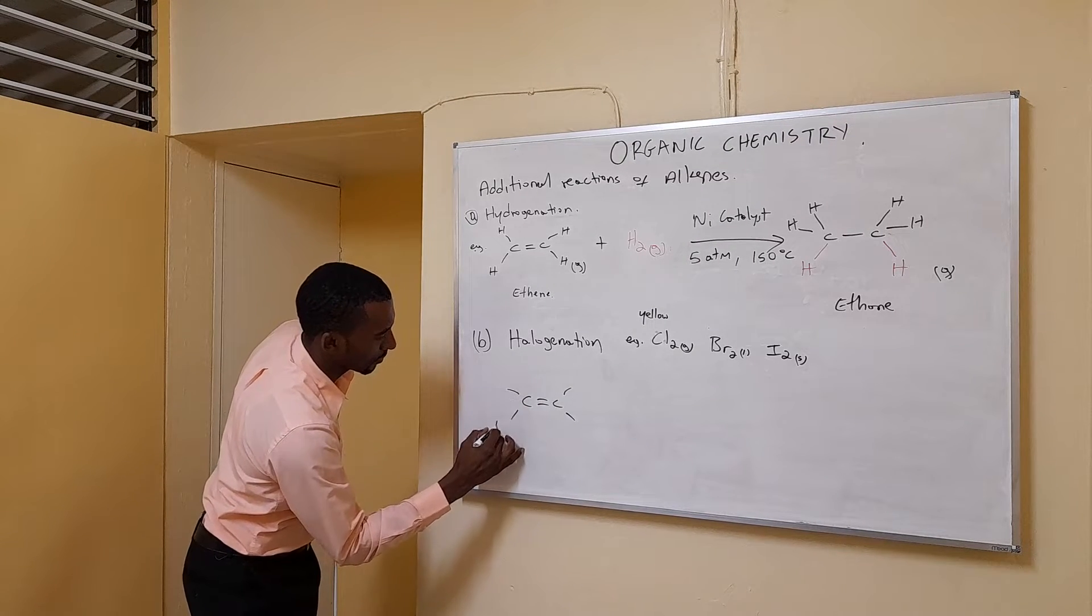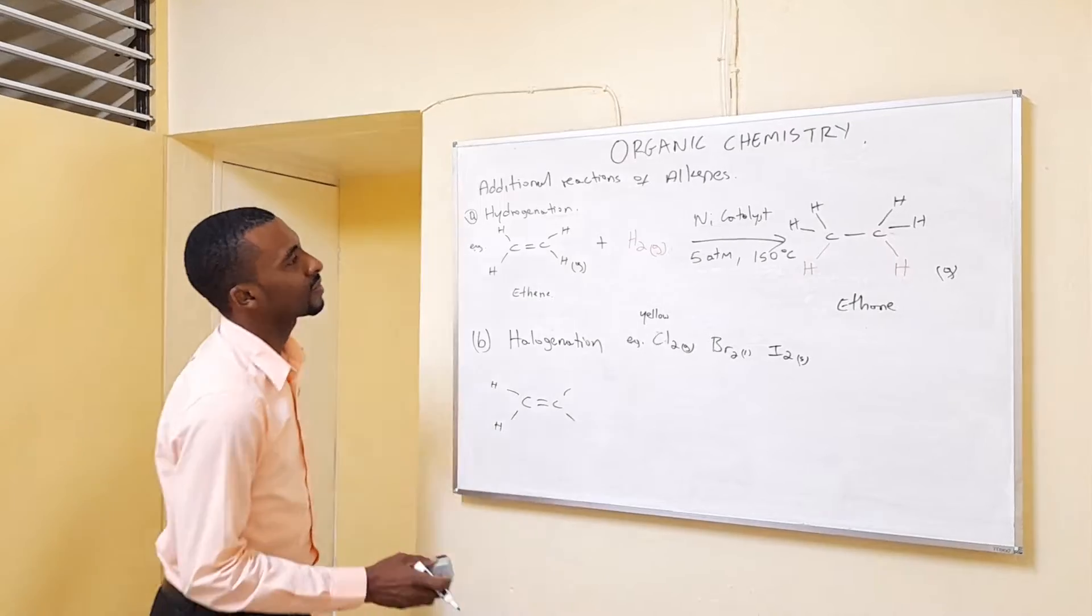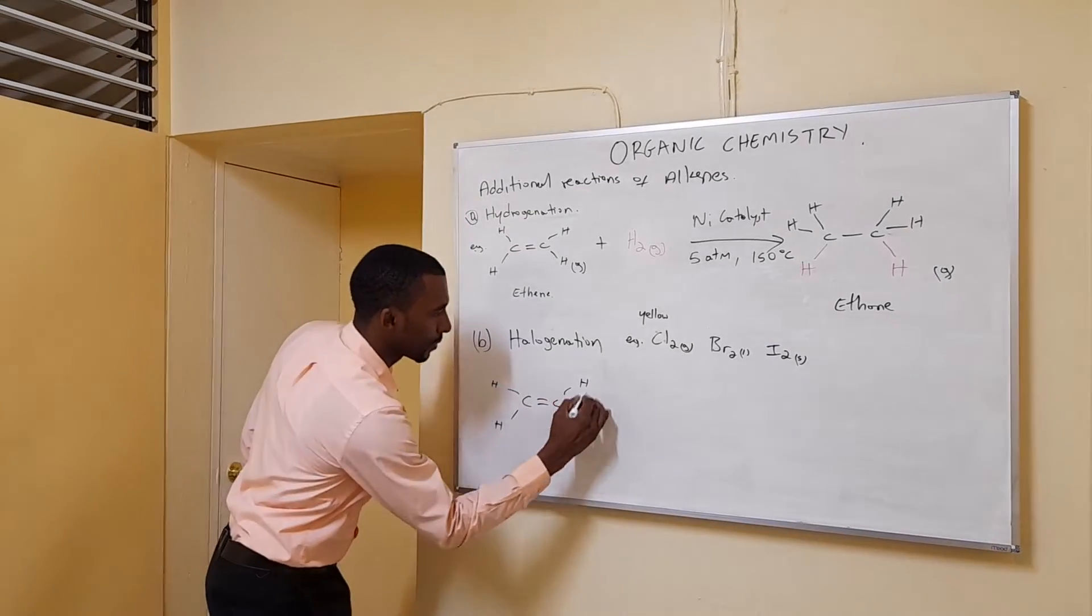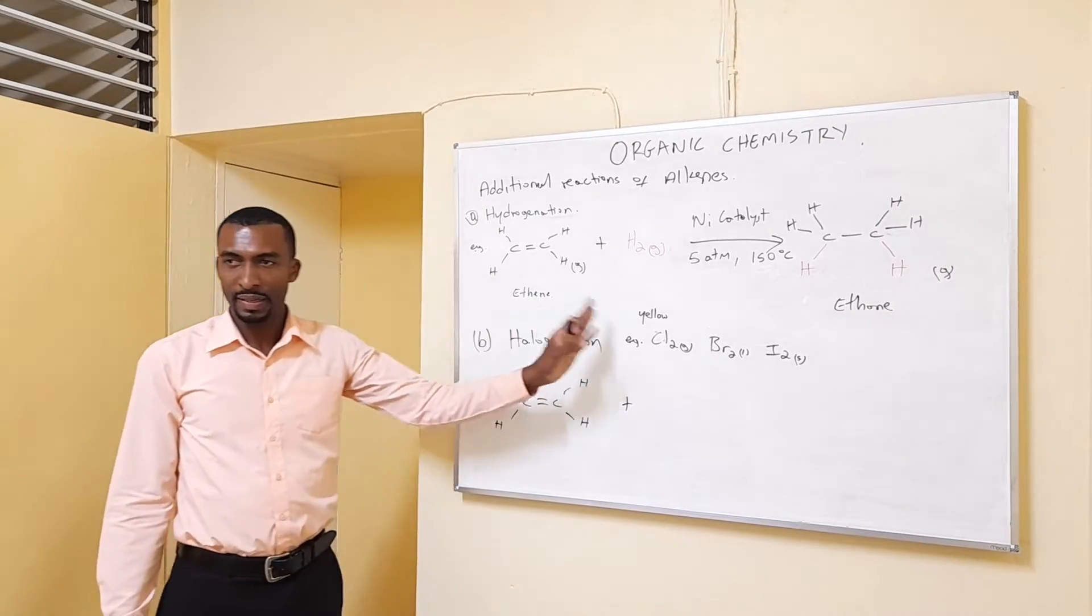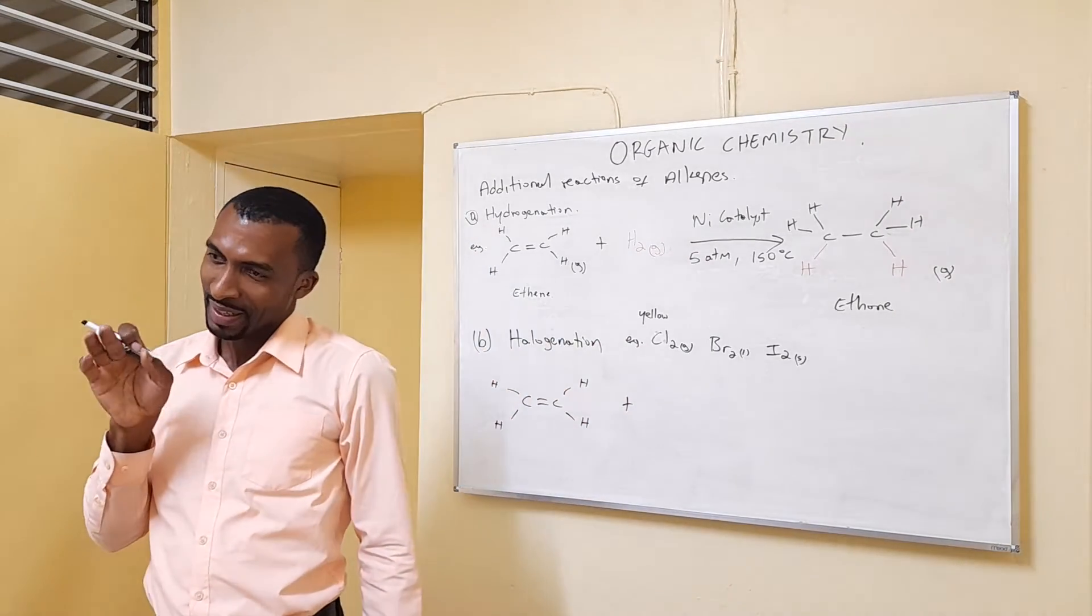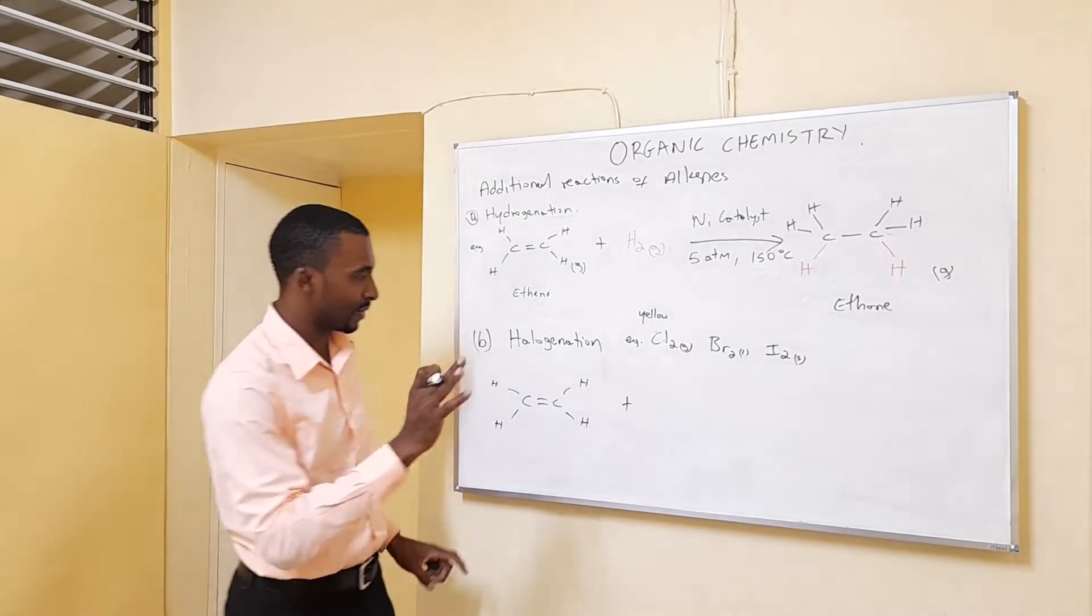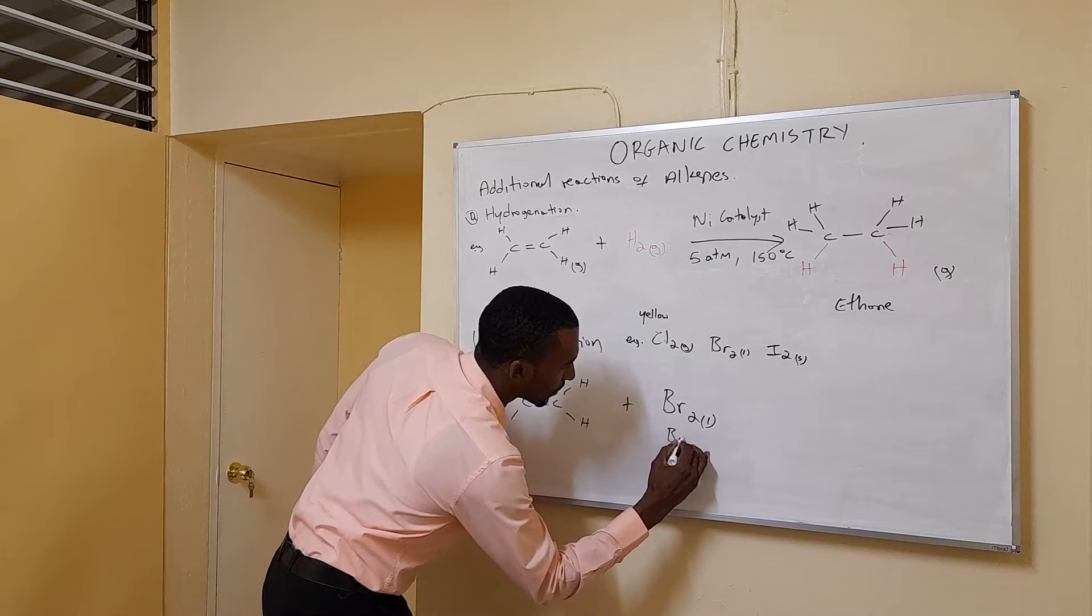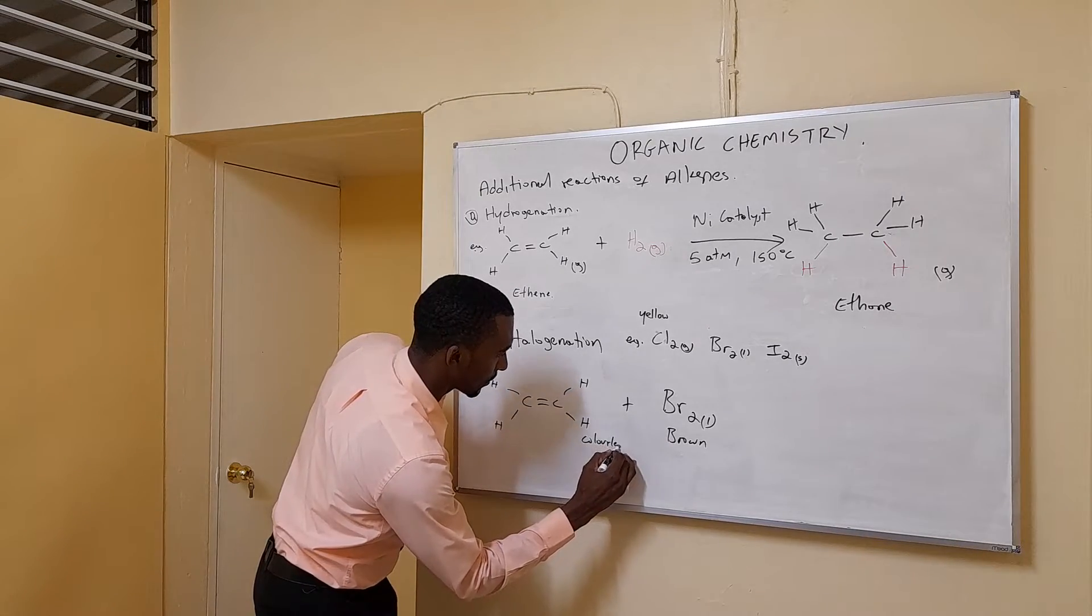We can use any one of the halogens, so we're going to use bromine. I like to use bromine because bromine is one of the reagents they will give in the exam to distinguish between alkanes and alkenes. So the color - Br2 is liquid and it's brown, brown liquid. This ethene is colorless.